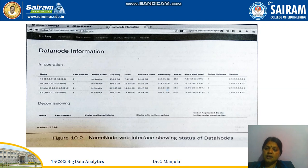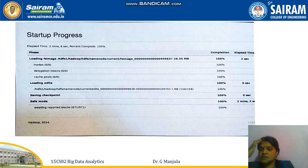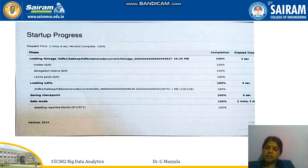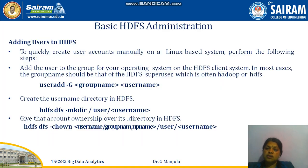The DataNode view contains the node name, admin status, capacity used, number of options used, and decommissioning status. The NameNode web interface shows the status and number of data nodes. Startup Progress covers loading images, loading edits, saving checkpoints, and save mode. The browsing utility allows browsing the HDFS file system history.